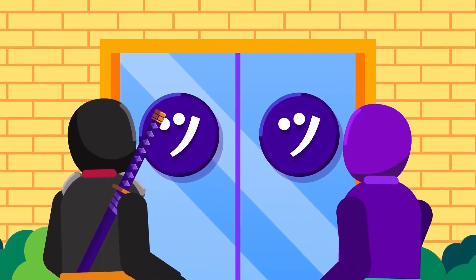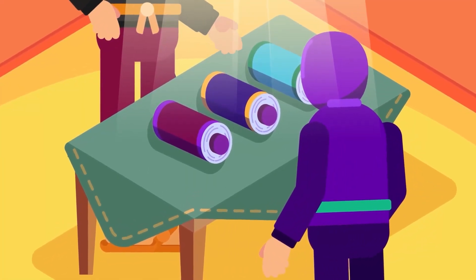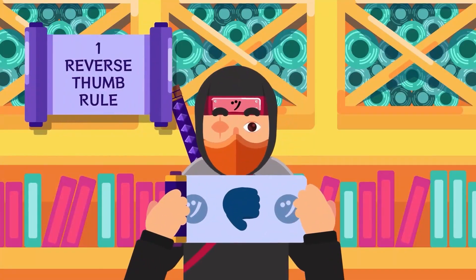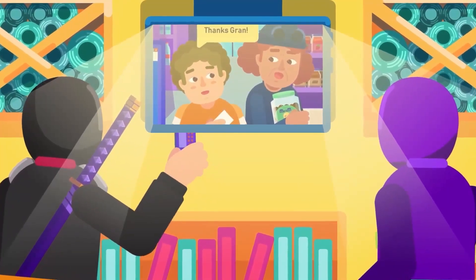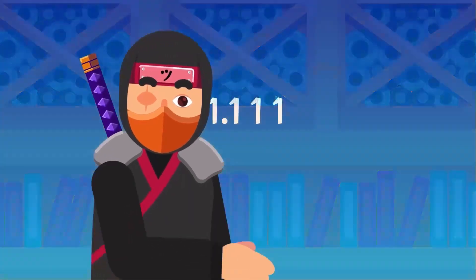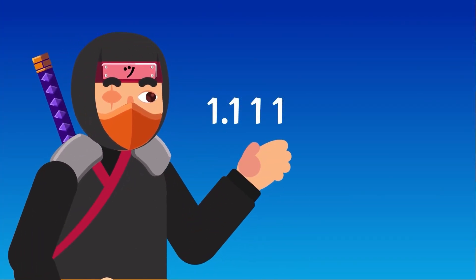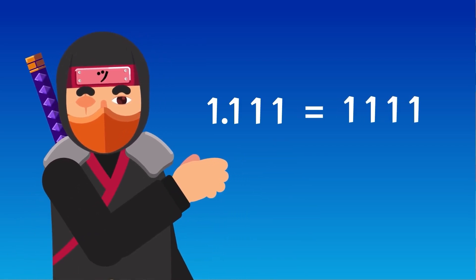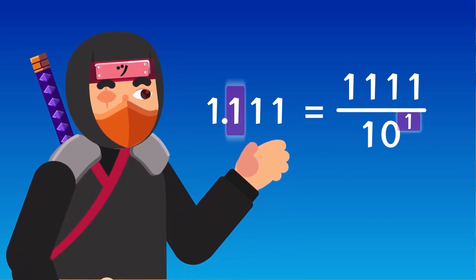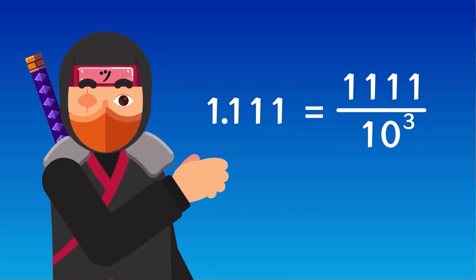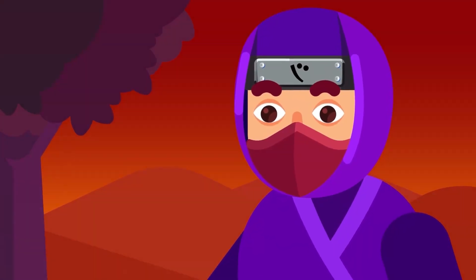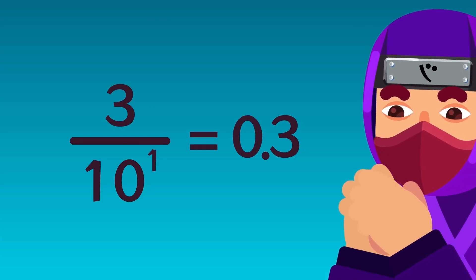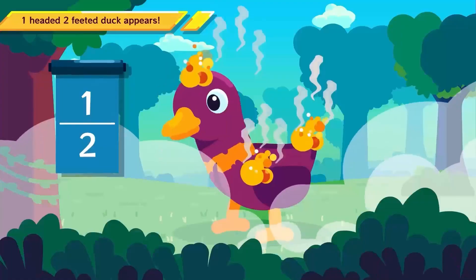Let us start the conversion of fractions into decimal numbers. Fractions can be converted to decimals using several methods. The first method is the reverse of the thumb rule in decimal numbers, and is only applicable for fractions whose denominator is a power of 10. The thumb rule states the decimal point is placed exactly to the right of the unit position of the whole number, and once you remove the decimal, the number is divided by powers of 10 equal to the number of spaces after the decimal point, counting from the left. To convert a fraction like 3 over 10 to a decimal, this fraction has one zero in the denominator, so the index of 10 is 1. As we divide by 10 to the power of 1, we put the decimal point after one space from the right. Thus, the answer is 0.3.